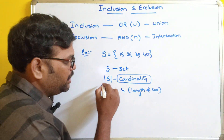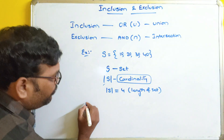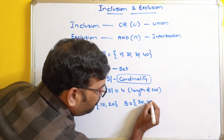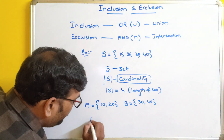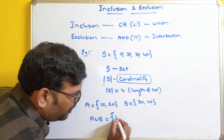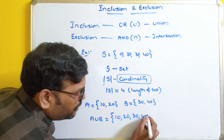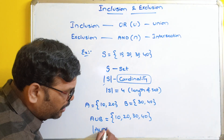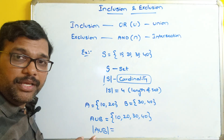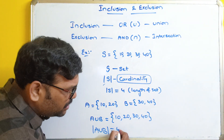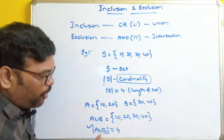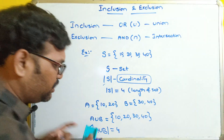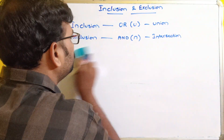This inclusion and exclusion is solved with respect to cardinality only. For example, if A = {10, 20} and B = {30, 40}, we know union means inclusion. A union B gives {10, 20, 30, 40}. But in inclusion and exclusion, we use mod A union B — the cardinality of A union B, not the actual elements. The cardinality here is 4. By using the formulas based on cardinality, we can solve any kind of inclusion and exclusion problems.